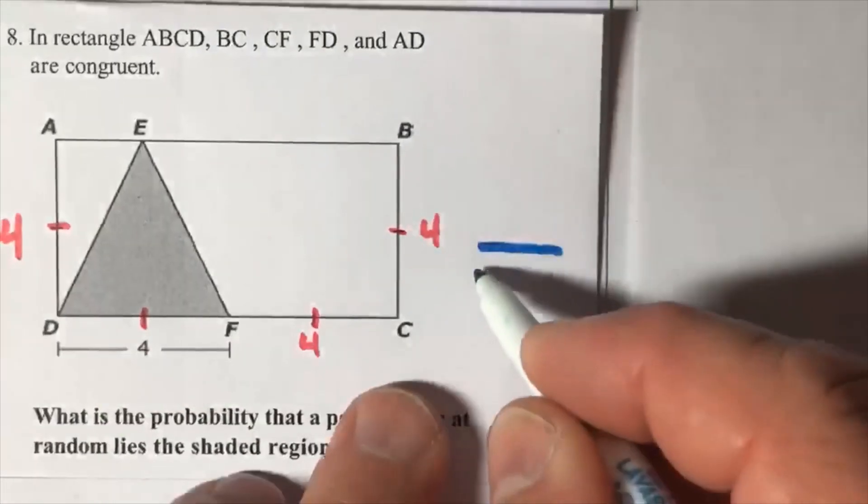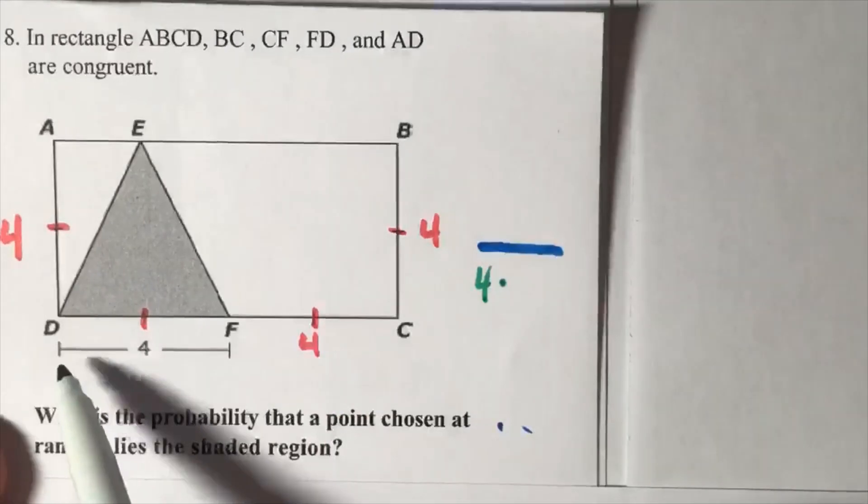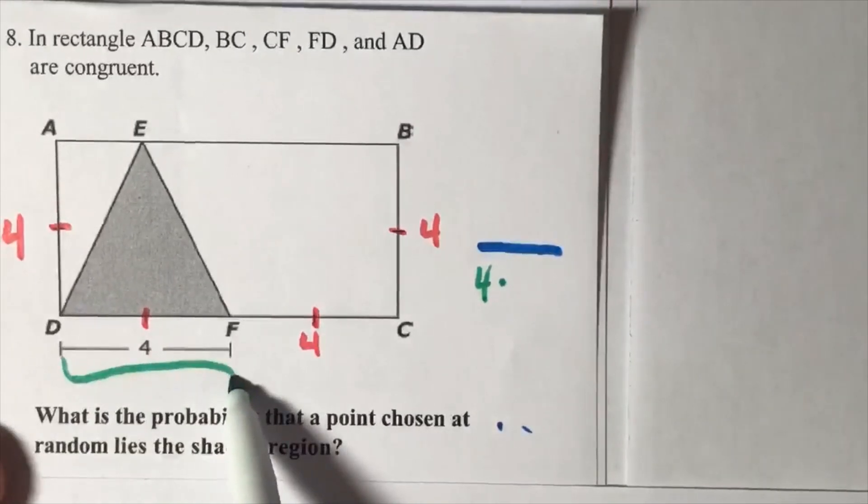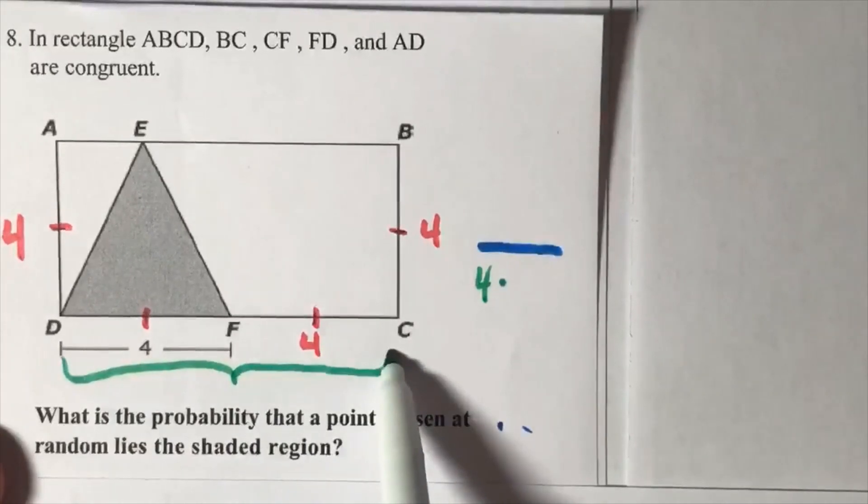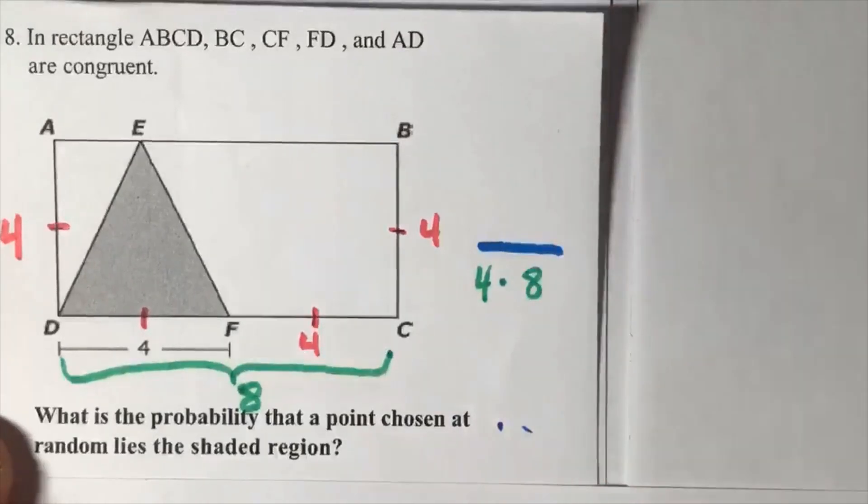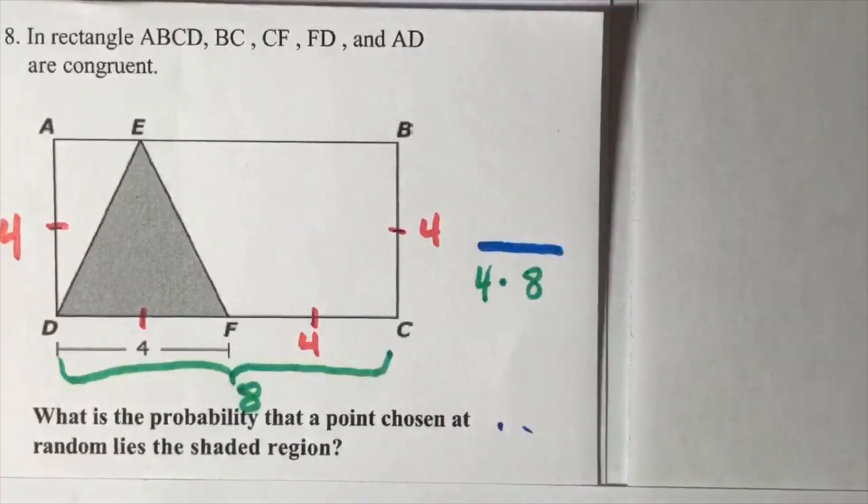How do I get eight? Four plus four. So the entire length from D to C is eight. That's my rectangle - that's the area of the rectangle.